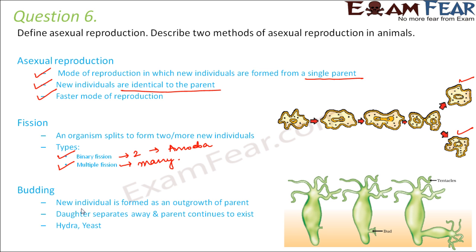The next method of asexual reproduction is budding. A bud — a small outgrowth — develops on the body of the parent organism. This outgrowth gradually develops to form a new organism and then detaches itself from the parent's body. As soon as the daughter organism develops completely, it separates away and the parent continues to exist. This is commonly seen in hydra and yeast.